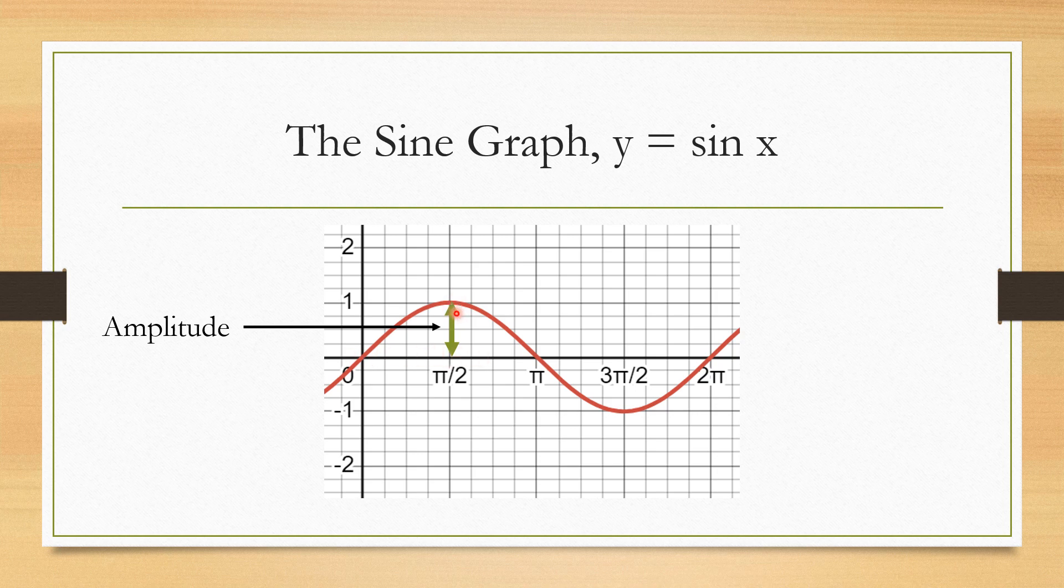But there's also what we call the period. I talked about how the graph repeats itself endlessly. So we want to measure how long one period takes. So from 0 and ending at 2 pi, we call the period of the regular y equals sine x graph 2 pi.